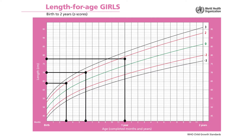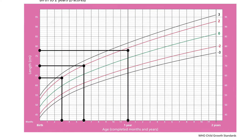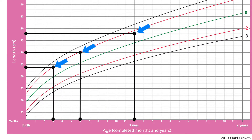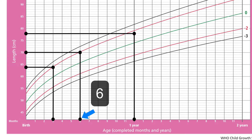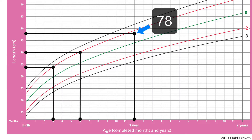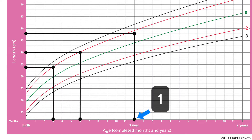Let us use an example to understand plotting on this chart. This graph shows Alia's length for age plotted 3 times over a few months. At the first point, Alia was 3 months of age and 64 centimetres in length. At the second point, Alia was 70 centimetres in length at 6 months of age. Finally, at the third point, she was 78 centimetres in length at 1 year of age.